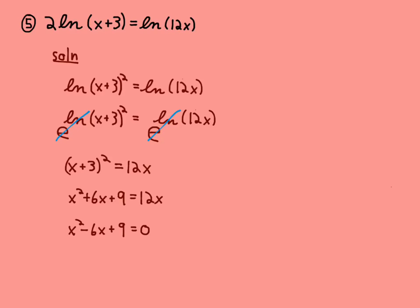x squared minus 6x plus 9 equals 0. That's going to be x minus 3, the quantity squared, equals 0. That means x equals 3. So I only got one solution.